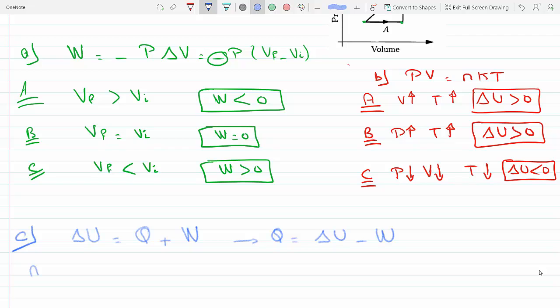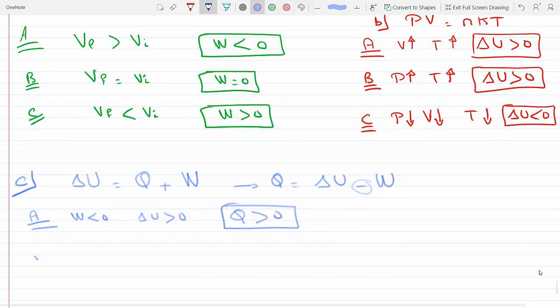Now, for step A, we already said that the work is negative and we already said that delta U is positive so if you plug this in you have a minus sign here so that would make Q positive so the heat added in the gas in A is greater than zero. Okay for part B work is zero so in this case Delta U is just Q but we already said that Delta U was positive here because the temperature increased so that makes Q greater than zero.